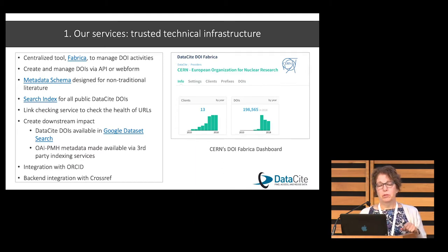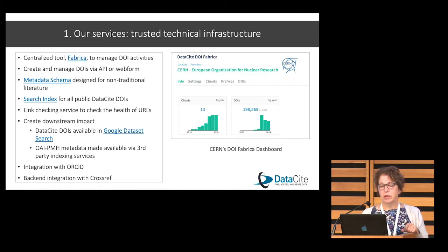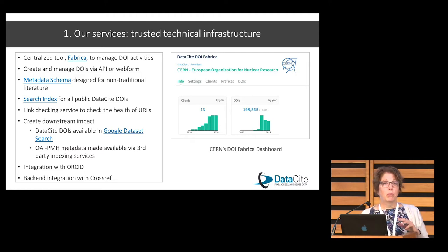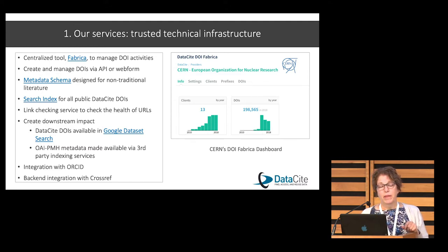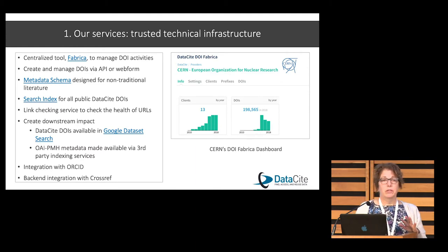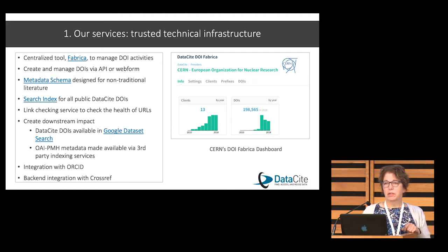We have a centralized tool called Fabrica, and you can see a screenshot of CERN's DOI Fabrica dashboard. This is where people can go and manage all of their DOIs, collect statistics on those DOIs, et cetera. We also have APIs, of course — you're not going to mint 17 million DOIs using a web-based form.